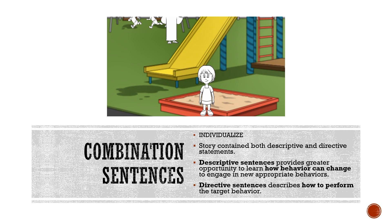When you include a large number of descriptive sentences, this provides the student with an opportunity to learn how his or her behavior can change to engage in new appropriate behaviors in that situation. However, for some students this can be very confusing if it's mostly descriptive sentences, because they won't know what is actually expected of them. So it is recommended for these students that you use more directive sentences, which describe to the student how to perform the target behavior.